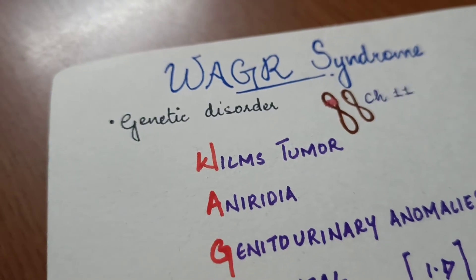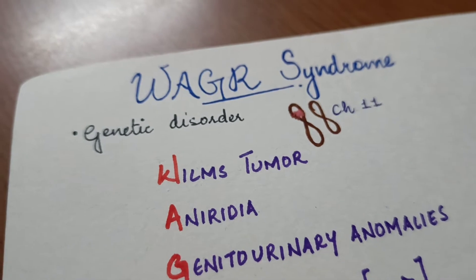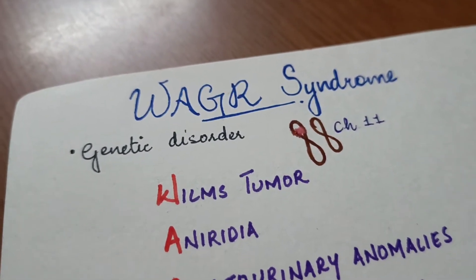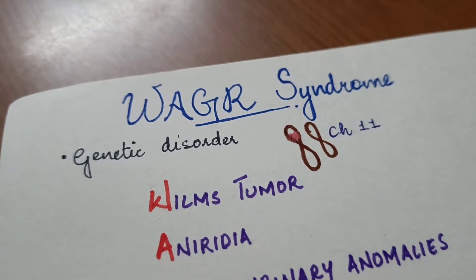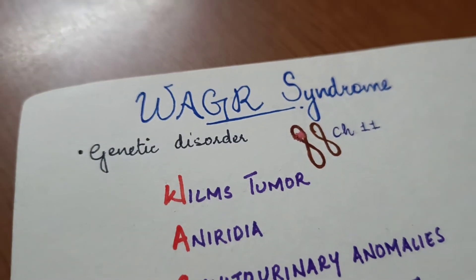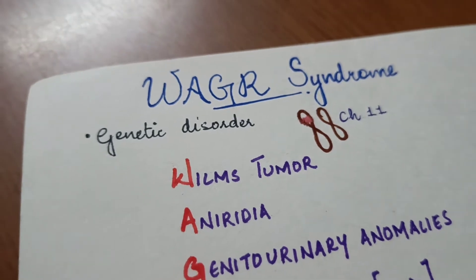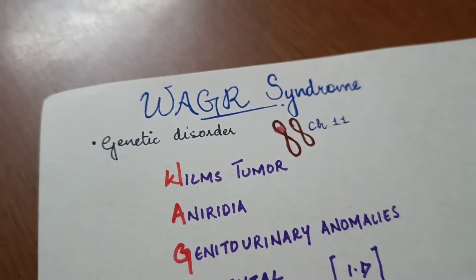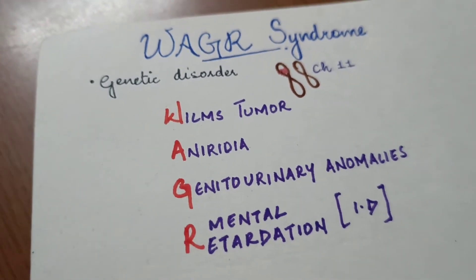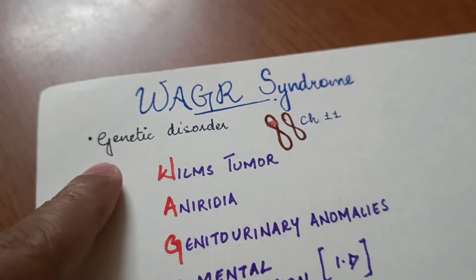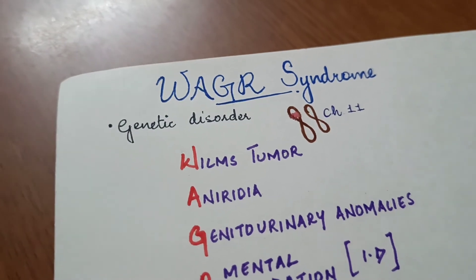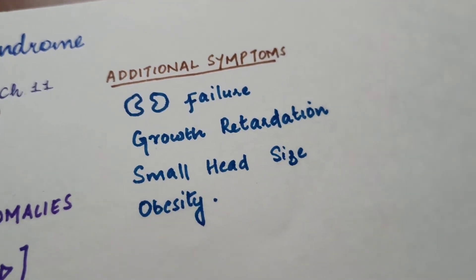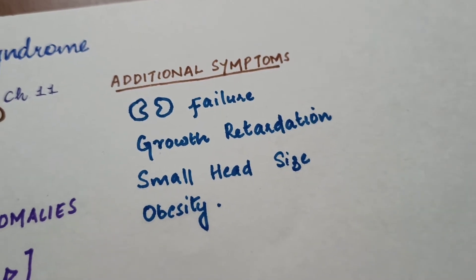Wilms tumor is not present in everyone — only about 50% of individuals have the tumor. That means everyone does not have the same symptoms. In addition to the four main features, some individuals have additional symptoms such as kidney failure, growth retardation, small head size, and obesity.